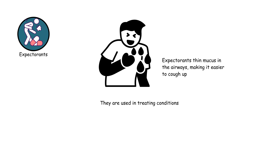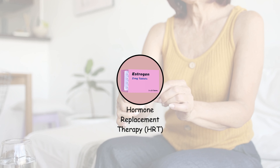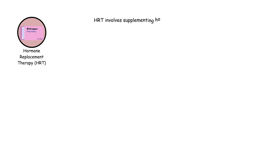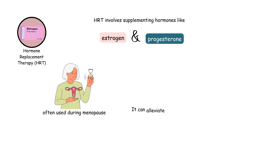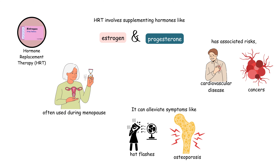Hormone replacement therapy (HRT) involves supplementing hormones like estrogen and progesterone, often used during menopause. It can alleviate symptoms like hot flashes and osteoporosis, but has associated risks, including cardiovascular disease and certain cancers.